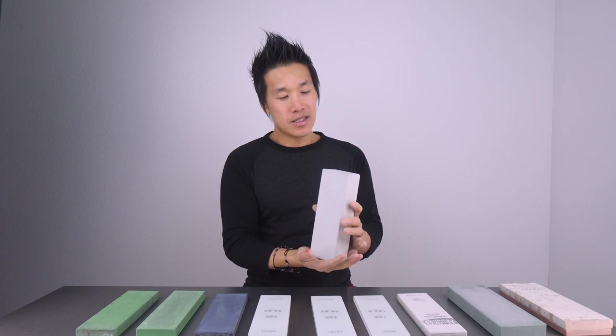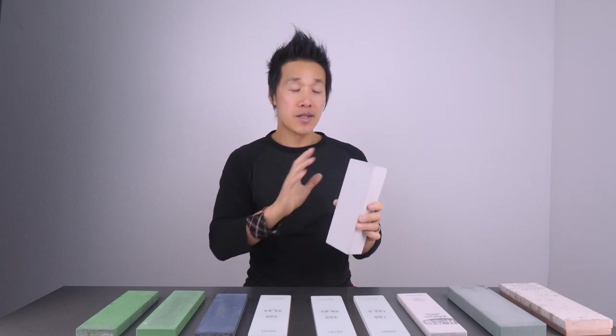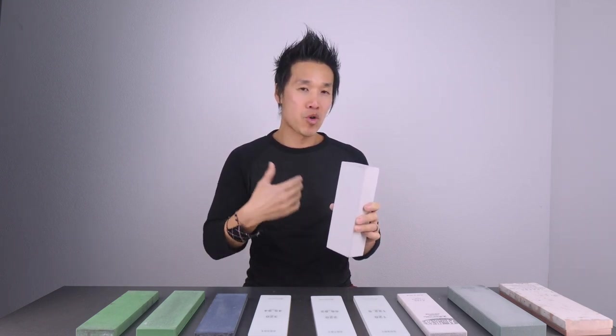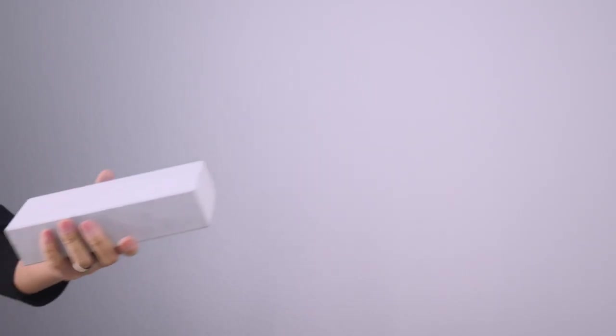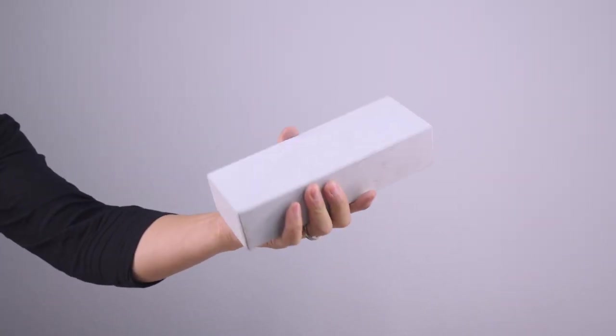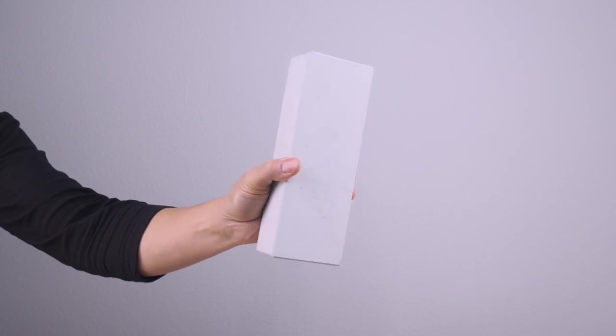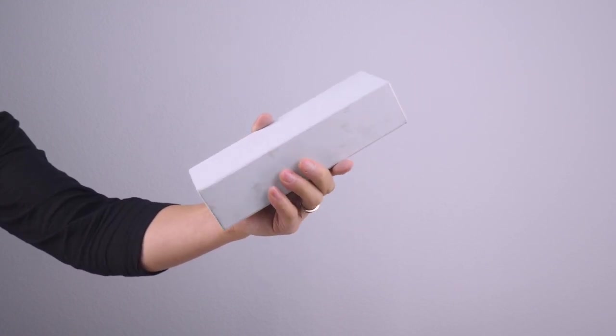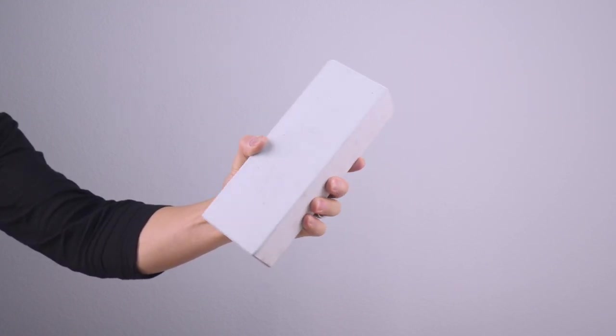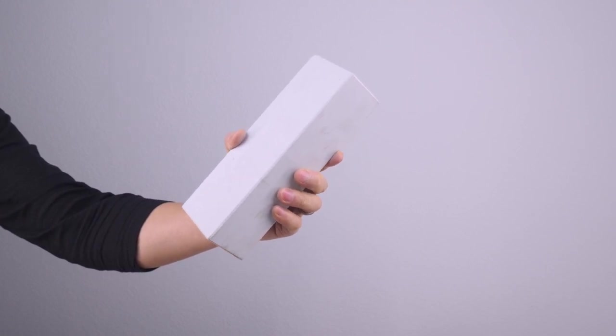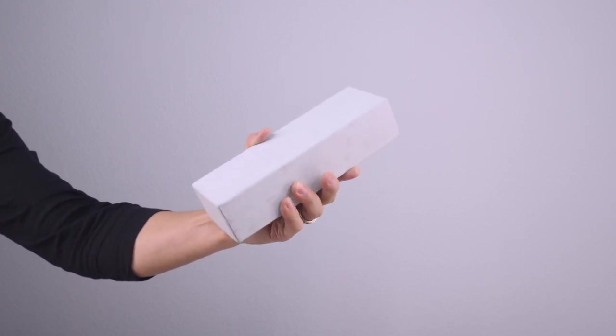This stone here is one of my favorite splash-and-goes in the sub-400 grit level. Decent cutting speed. It has a really nice feel to it because it is soaking, it has a much more organic feel than some of the splash-and-goes I've reviewed. In terms of wear, it is a medium wearing stone. I wouldn't say it's very fast and it's definitely not very slow because you will see slurry as you're sharpening on the stone. What this stone has over some of the other stones is it's got great feedback.